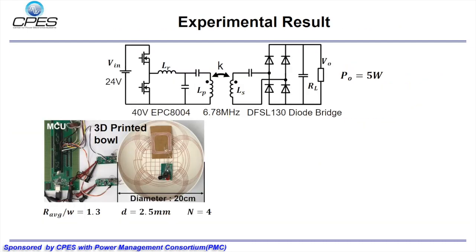After we got the coil geometry parameters, we used 3D printing technology to print the charging bowl, and the picture of the hardware is shown here. To drive the coils, LC-CLLC resonant converter is adopted. In the primary side, EPC eGaN FET devices are used to operate at 6.78 MHz. In the secondary side, DFSL30 diode bridge is utilized.